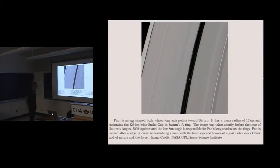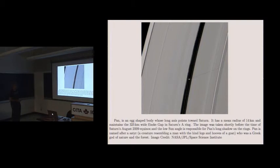Now here's the Encke division. This is the smaller of the divisions, the one that's in the A ring. Here's the satellite Pan. What Pan does is it takes angular momentum coming from inside the inner edge of the Encke division, grabs it, and transfers it to the material on the outside, preventing the division from viscously closing — which it would otherwise do in much less time than the age of the solar system.